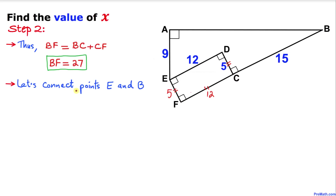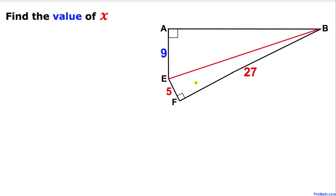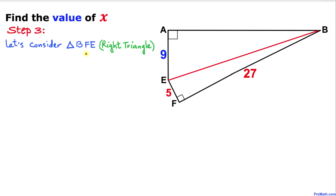Now we are going to connect points E and B. We connect them carefully and ignore point D. Here is our much nicer looking diagram — as you can see, we no longer have point D. Finally, we have two right triangles: one up here and another one. Let's consider triangle BFE.